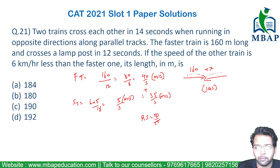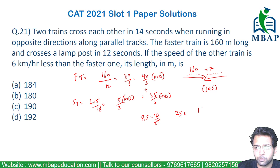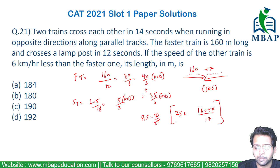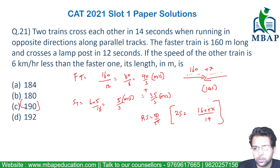The relative speed will be 40 plus 35 because they are moving in the opposite direction — that's 75 by 3, which is 25 meters per second. So 25 equals the total distance, which is 160 plus x, divided by the overall time of 14 seconds. Solving this, you will get the answer: the value of x is 190 meters.